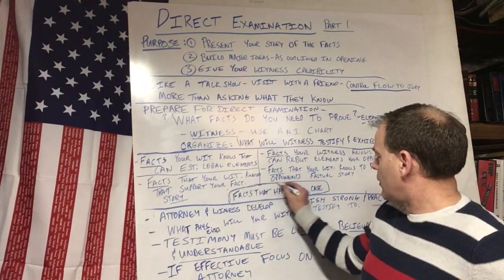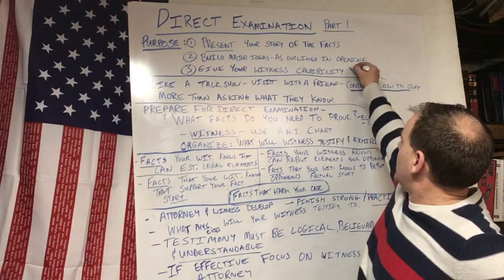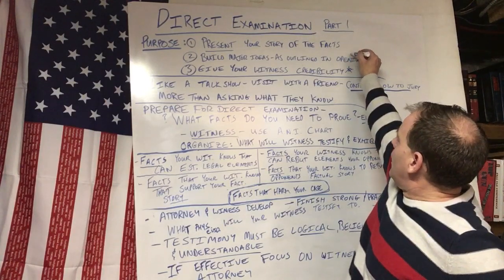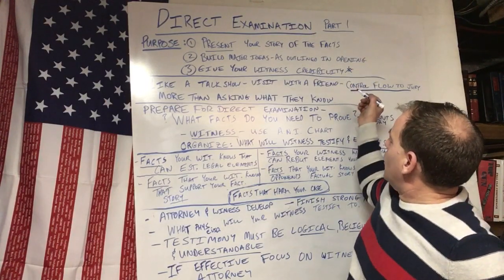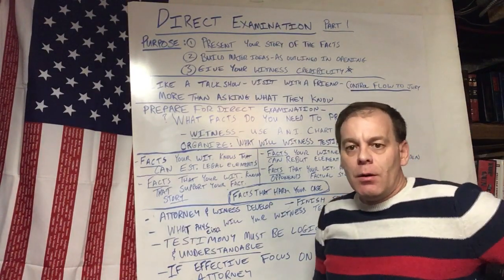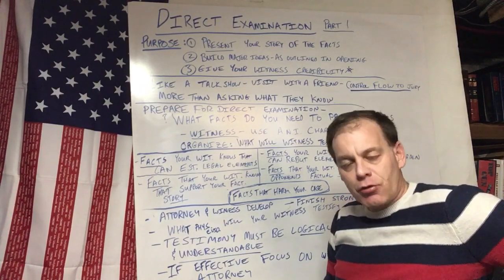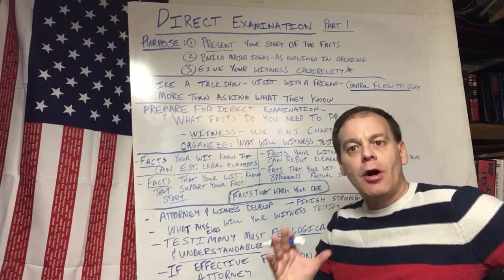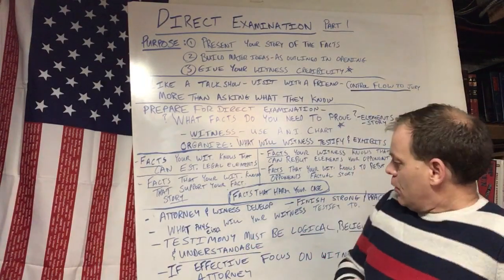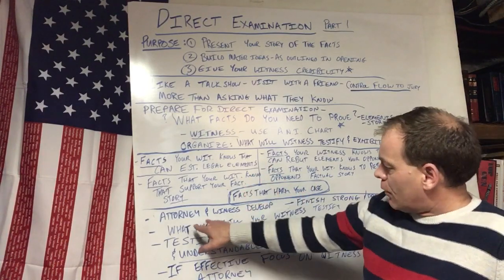The fifth and final category is facts that harm your case. You might wonder why we're talking about this on direct examination when we've been discussing building our case. Sometimes in a trial you're given facts that harm your case, and we're going to talk about how to deal with those in the second video.